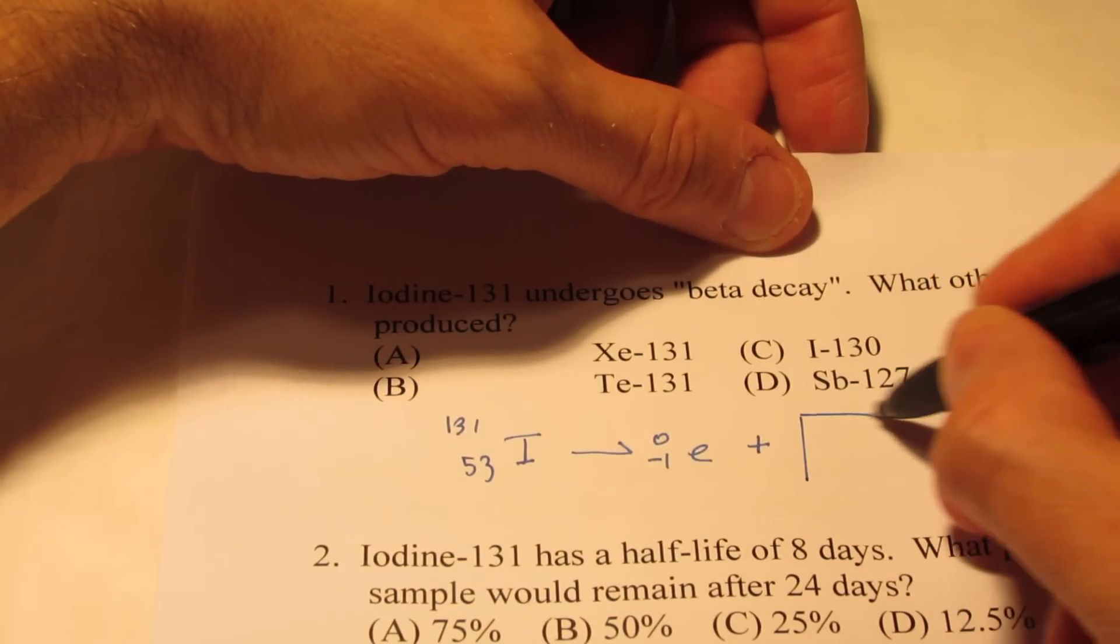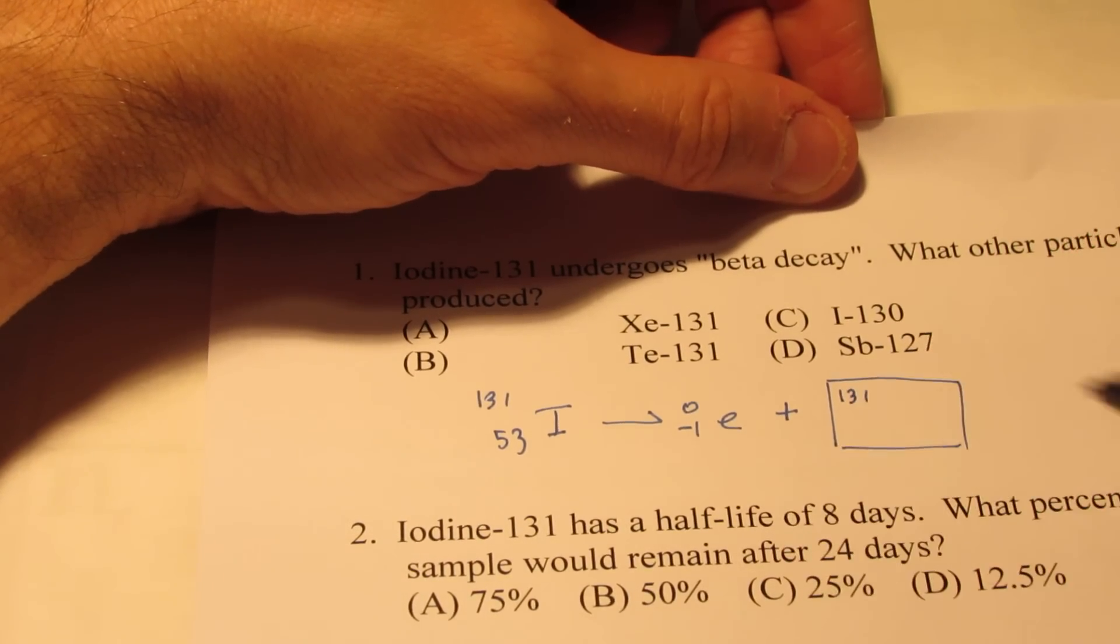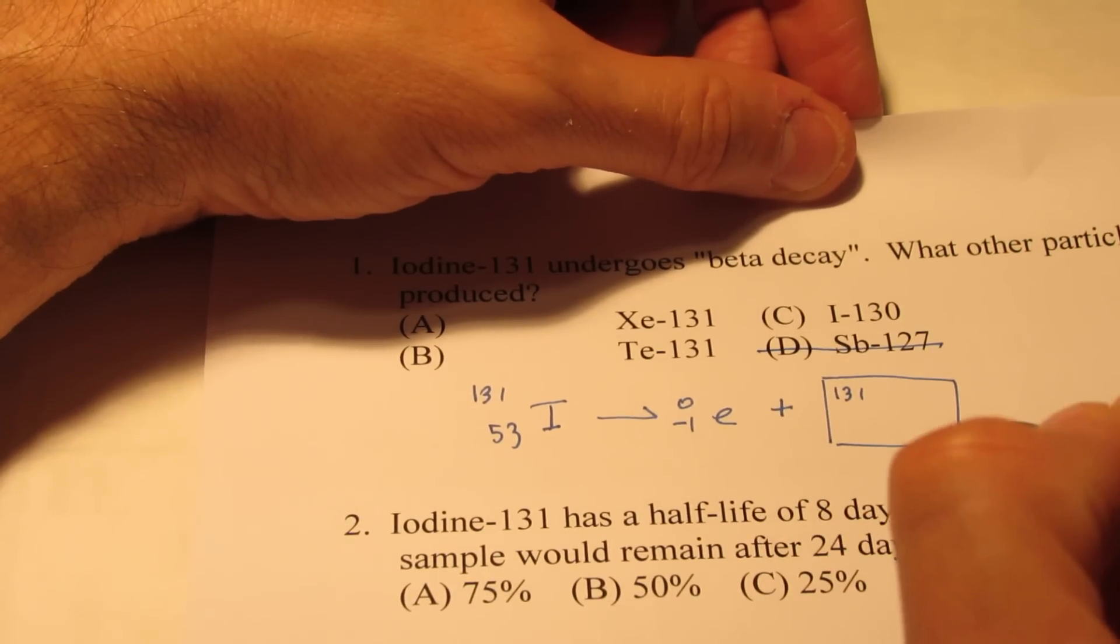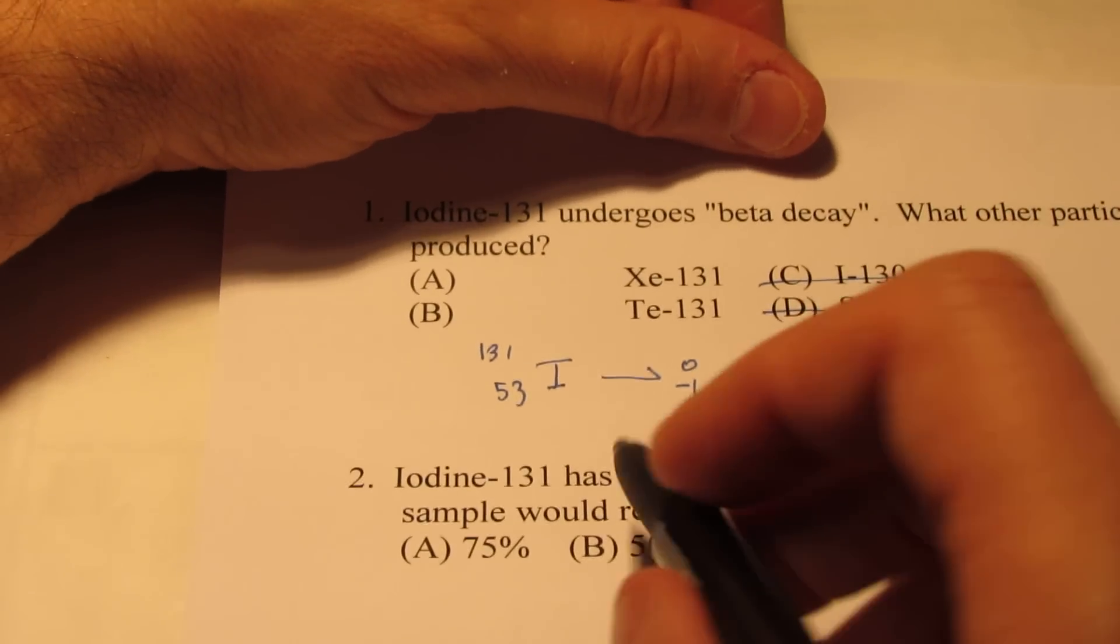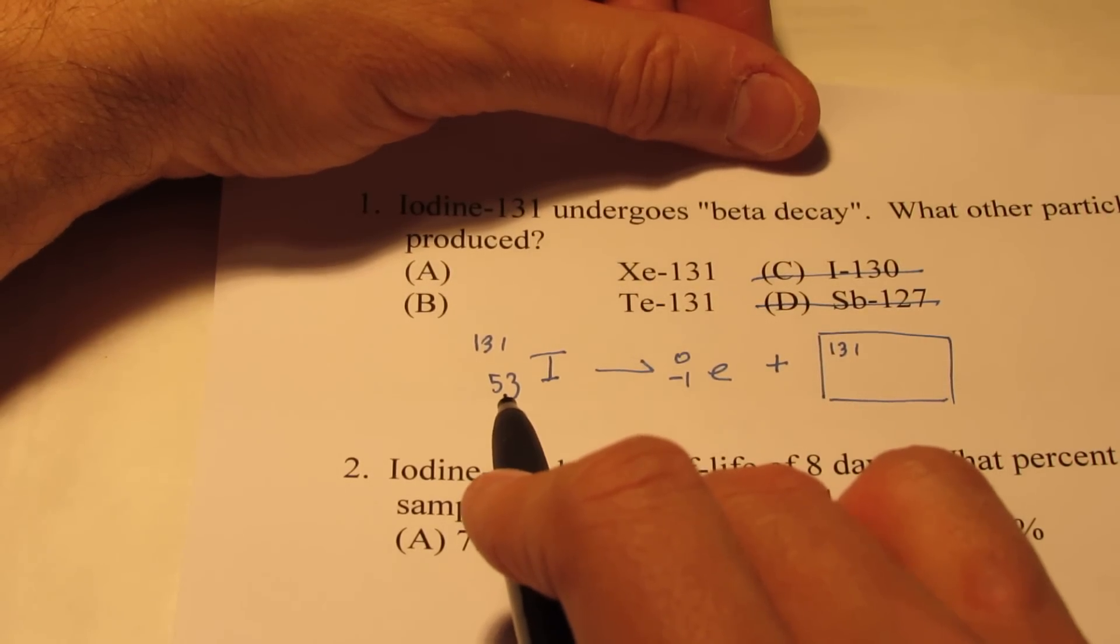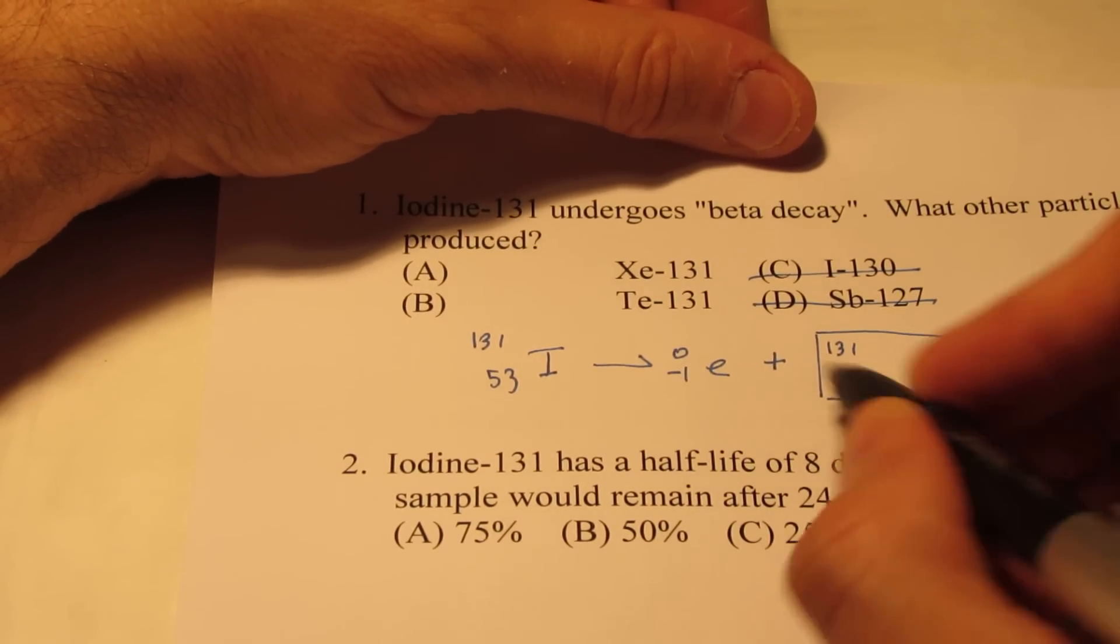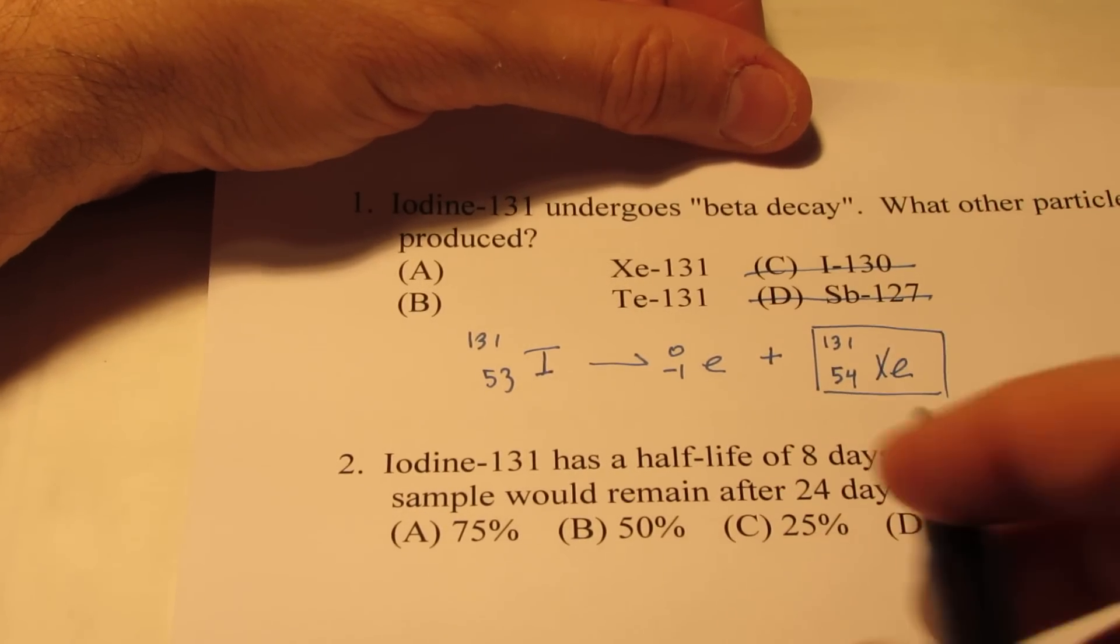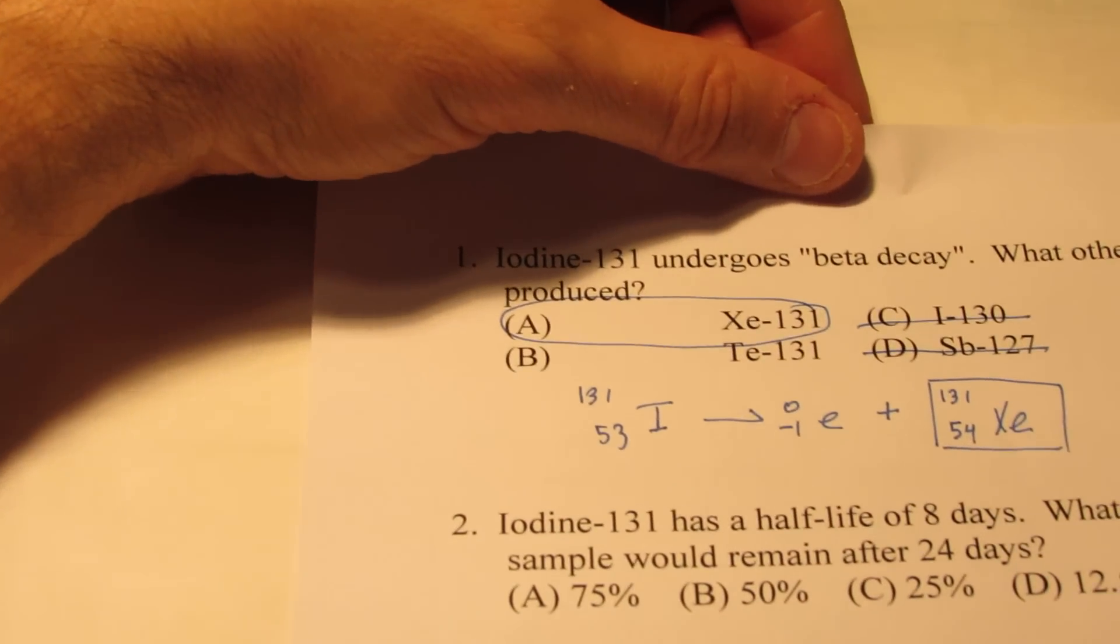So if it gives off a beta particle, what is this other particle? We know the mass number remains unchanged, so the mass of the new particle will be 131 still. So we can cross off antimony-127 and iodine-130 because we know the mass needs to be 131. What happens to the atomic number? Well remember, the atomic numbers need to balance. So if I have 53 on this side, negative 1 plus 54 will give me 53 on the right-hand side. And atomic number 54 is xenon. So I'll make an isotope of xenon, xenon-131. And that's why we will choose letter A.